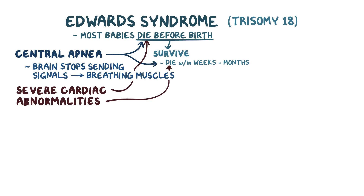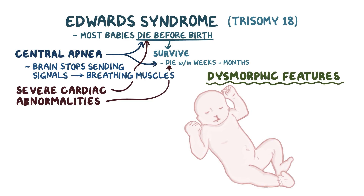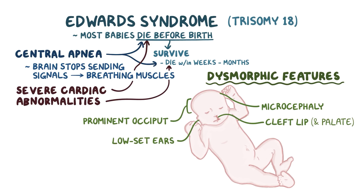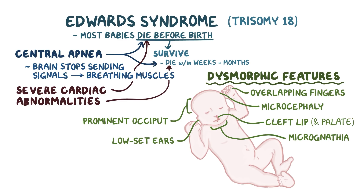There's a long list of dysmorphic features as well, like microcephaly, which means small head, a prominent occiput, low-set ears, cleft lip and palate, which are openings in the upper lip or roof of the mouth, micrognathia, or small jaw, clenched hands with overlapping fingers, and rocker bottom feet, which is when the soles of the feet are rounded and smooth, like the bottom of a rocking chair.